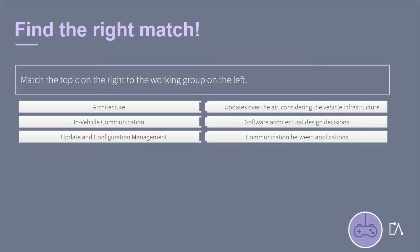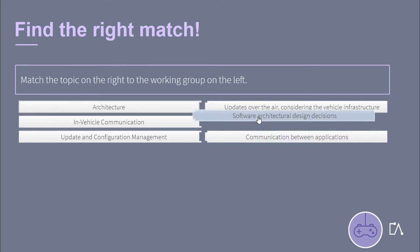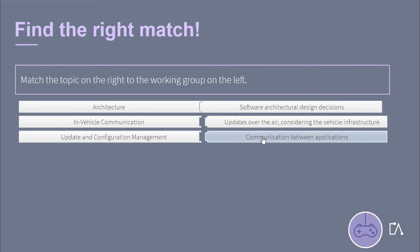Match the topic on the right to the working group on the left. Architecture: Software Architectural Design Decisions. In Vehicle Communication: Communication between Applications. Update and Configuration Management: Updates Over the Air, Considering the Vehicle Infrastructure.